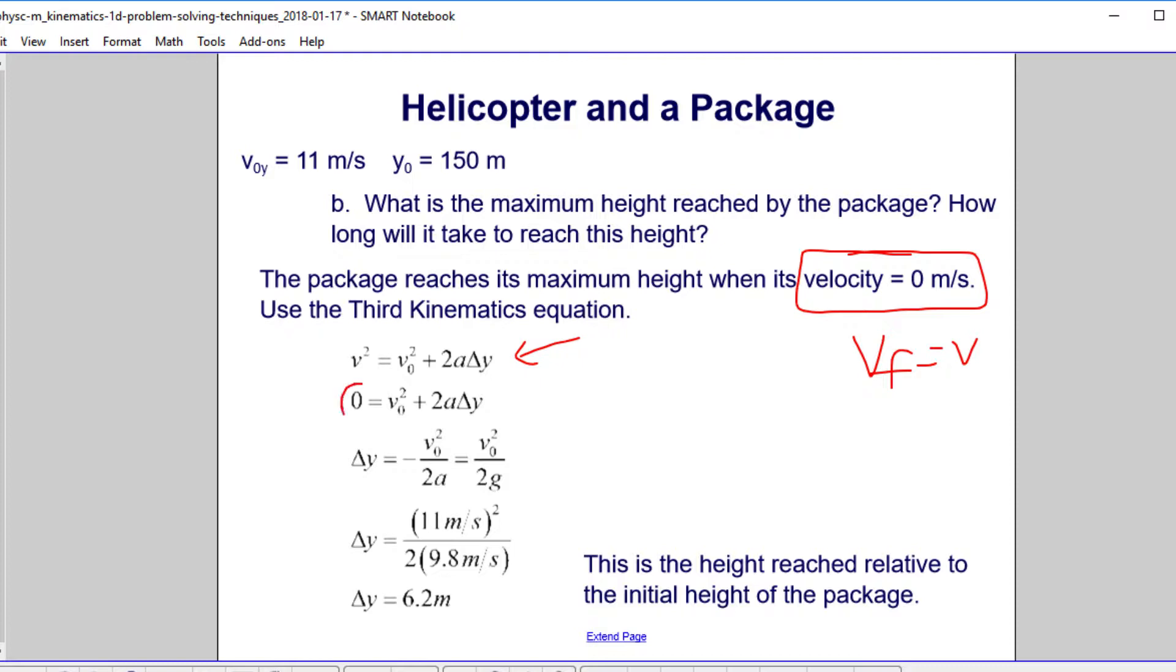So our final velocity is zero. We do a little algebra. Delta y is minus v0 squared over 2a. However, a is a negative g, so that gets rid of our negative sign, and we just have v0 squared over 2g. We plug the numbers in, and this is the change in height compared to our initial height. This is our initial height here.